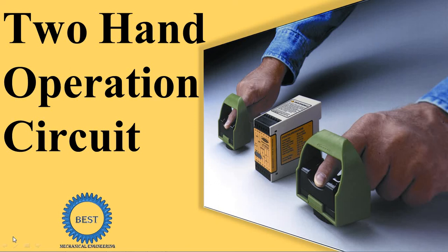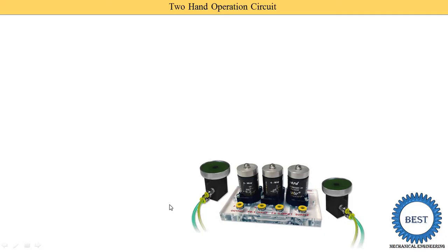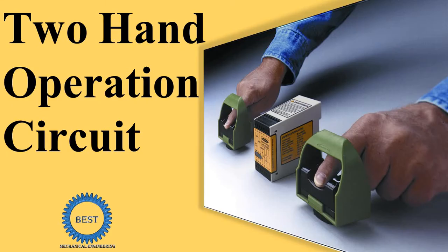In this video, I explain the introduction of two-hand operation circuits and the various types. First, the introduction: from the name you can understand the meaning — two-hand operation circuit means the circuit operates only if the operator uses both hands, and the machine operates only by using both hands.